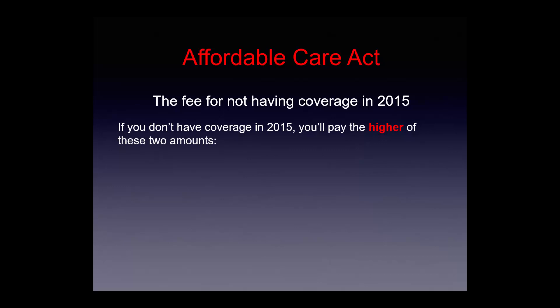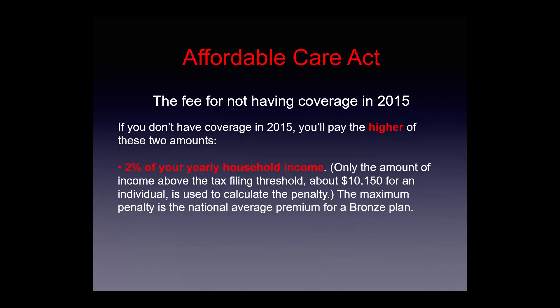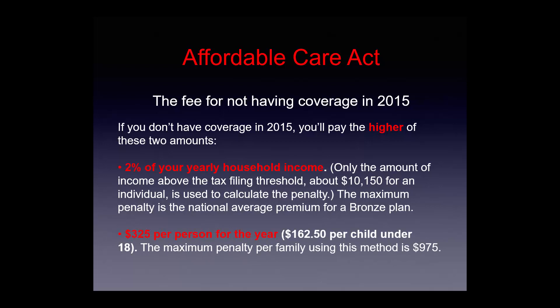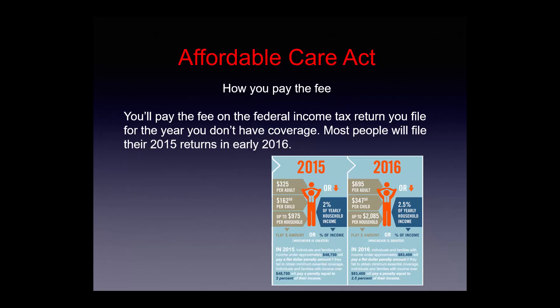The fee for not having coverage in 2015 is the higher of two amounts: 2% of your yearly household income (only the amount above the tax filing threshold, about $10,150 for an individual), or a flat dollar amount. The maximum penalty is the national average premium for a bronze plan. Last year it was $95 per person; in 2015 it jumps to $325 per person, $162.50 per child under 18, with a maximum penalty of $975 per family.